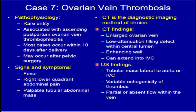Ovarian vein thrombosis pathophysiology: it is a rare entity associated with ascending postpartum ovarian vein thrombophlebitis. Most cases occur within 10 days after delivery, and it may also occur after pelvic surgery. Signs and symptoms: fever, right lower quadrant abdominal pain, and palpable tubular abdominal mass. CT is the diagnostic imaging method of choice. CT findings: enlarged ovarian vein with a low-attenuation filling defect within the central lumen, enhancing wall, and possible extension into the inferior vena cava. Ultrasound findings: tubular mass lateral to the aorta or inferior vena cava, variable echogenicity of the thrombus, and partial or absent flow within the vein.